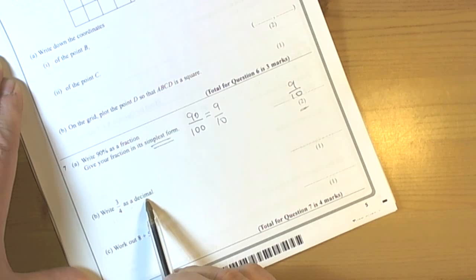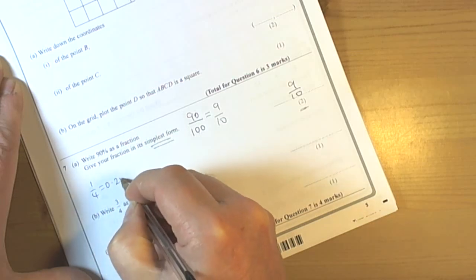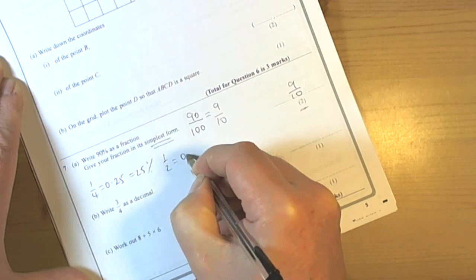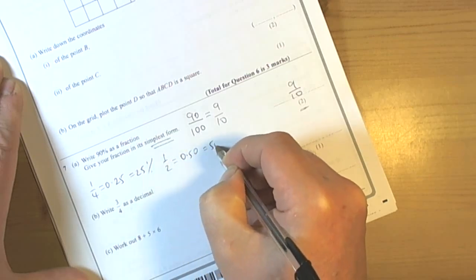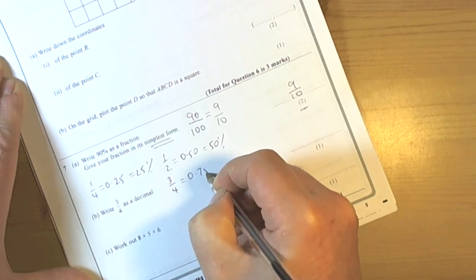Write 3 quarters as a decimal. Well there are loads of fractions and decimals that you need to be really familiar with for your exam. Things like a quarter, 0.25, 25%, a half, 0.5, 50% and 3 quarters is one that you should know which is 0.75.